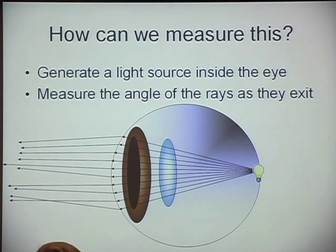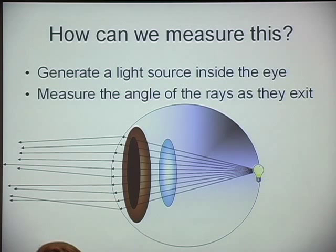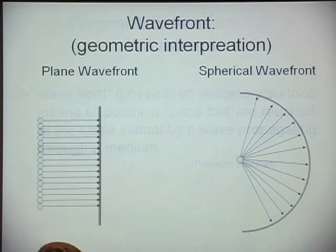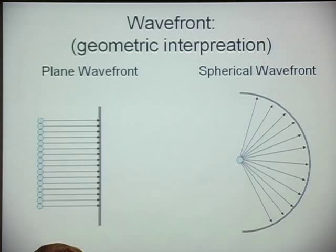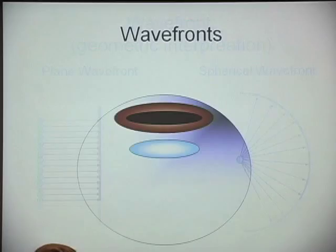Here's a better way: instead of sticking a sensor in the back of the eye, just stick a light source — it's much smaller. Because rays can be traced either way by the principle of optical equivalence, let the light come out and measure the aberrations externally where you can put a big sensor without bothering the person. What we're really measuring out there is the wavefront — an imaginary surface joining all points in space of a wave that have the same phase, or geometrically, a surface perpendicular to all the rays at any point.